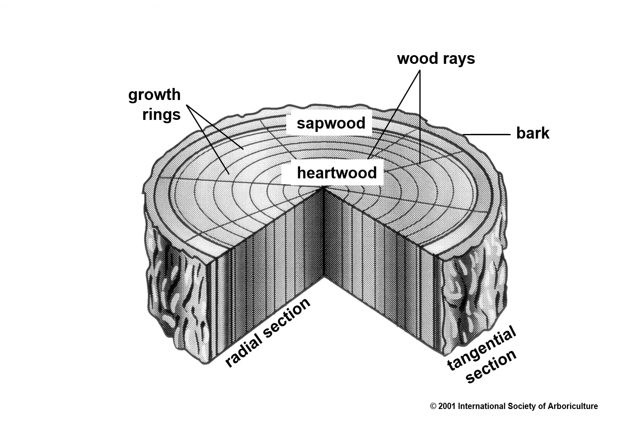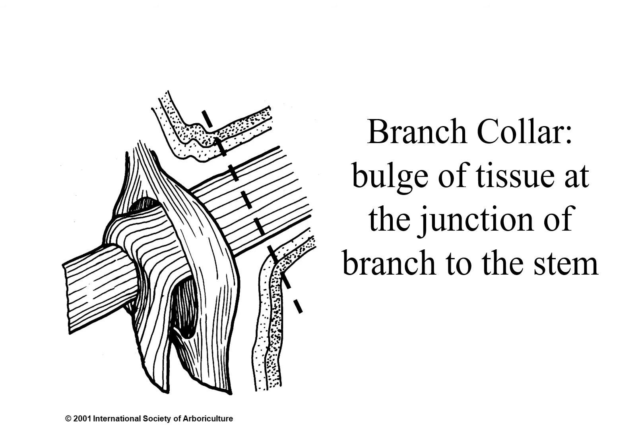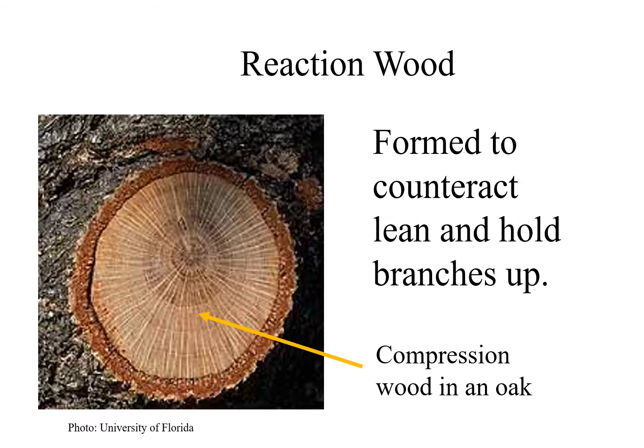Radial transport is the horizontal movement of water or nutrients between cells through the ray cells. Rays are channels of cells where water, nutrients, and carbohydrates move laterally through the tree across the stem. Xylem rays in the sapwood are the pathway for food movements to and from the phloem, which is just under the bark of the tree. The annual production of layers of tissue at the junction of the branch to the stem forms a shoulder or bulge called the branch collar. This is an important biological guide for when we do pruning cuts.